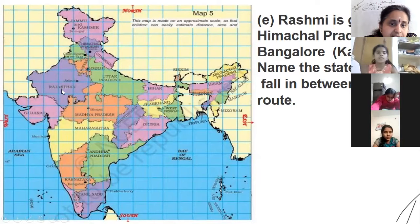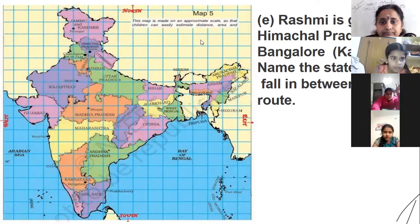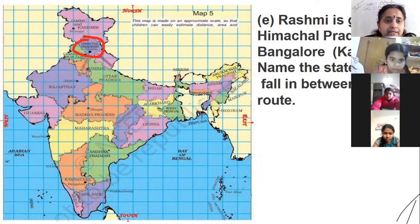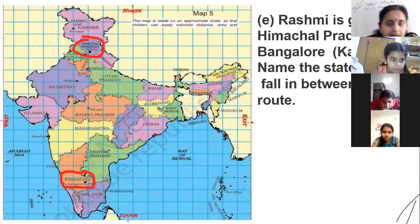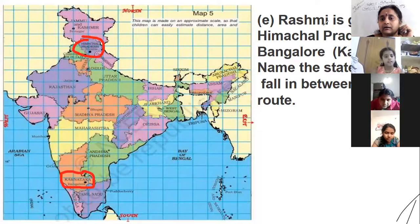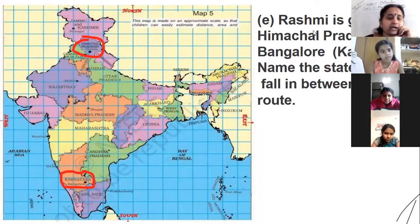Where is Himachal Pradesh? Here it is — Himachal Pradesh. Let me mark it. This is Himachal Pradesh. Himachal Pradesh to Bangalore — Bangalore means here it is Karnataka. Name the states which fall in between.